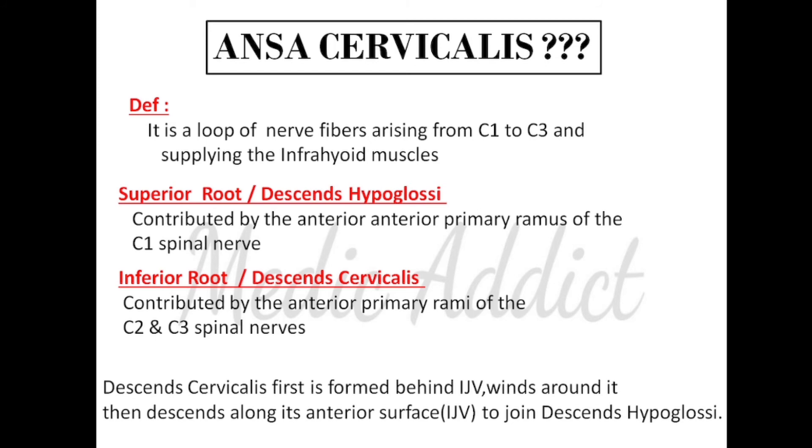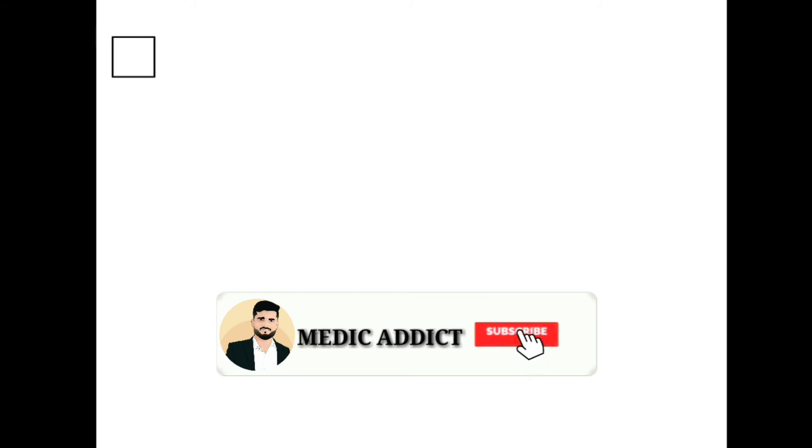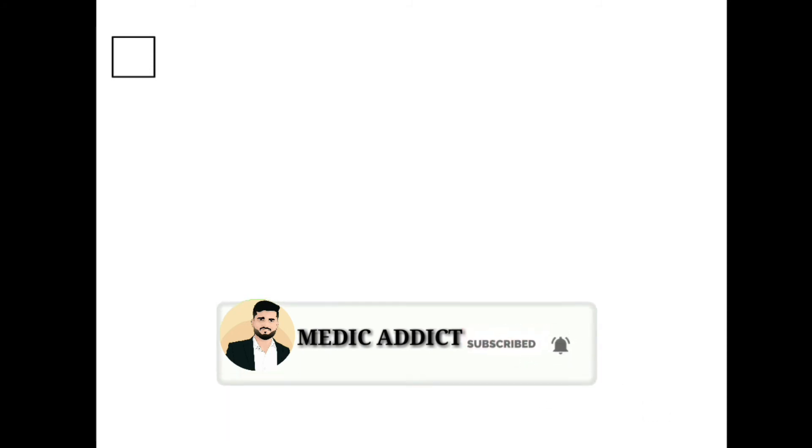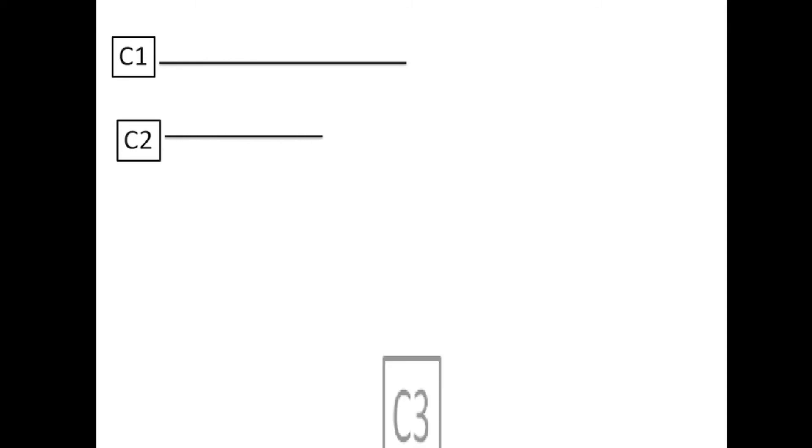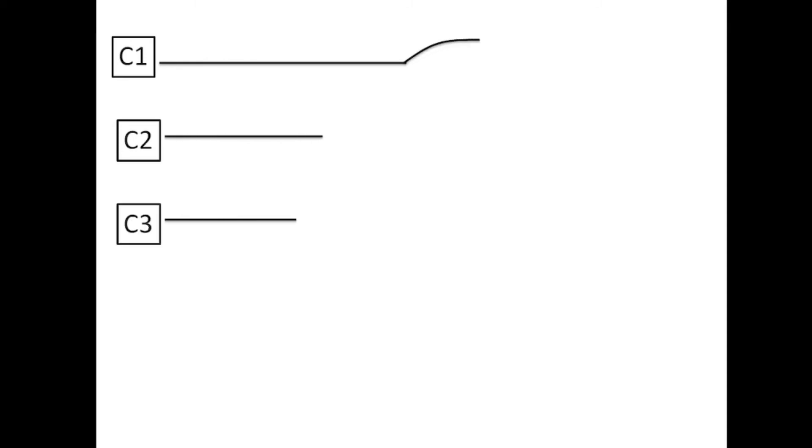Now we'll look at how the ansa cervicalis is formed. This is the exact way to depict or draw it in your exam to get full marks, and it is actually quite simple. It is made up of C1, C2, and C3. From C1, you get two fibers which supply the geniohyoid muscle and the thyrohyoid muscle.